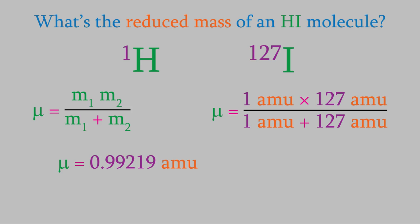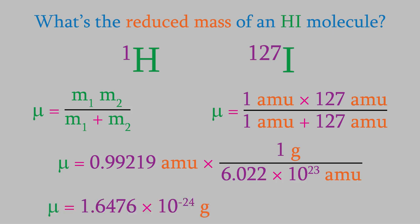When we use the reduced mass in a calculation, we'll usually want to have it in SI units, which for a mass means kilograms. As you might remember from your general chemistry days, the conversion factor between amu's and grams is Avogadro's number. So, our reduced mass is 1.6476 times 10 to the minus 24 grams, which is 1.6476 times 10 to the minus 27 kilograms.